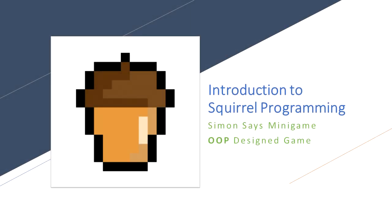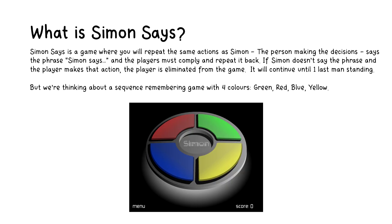Welcome to the introduction to Squirrel Programming. Today we're going to be doing a Simon Says minigame and it will be designed in OOP. Simon Says is a memory game. You have to repeat the sequence that is randomly generated. You'll do this until you hit the wrong colour.